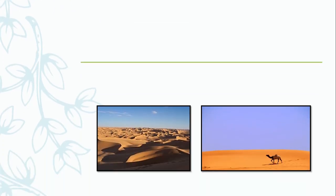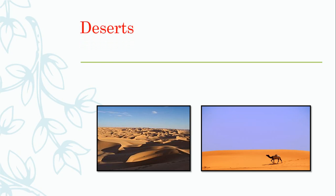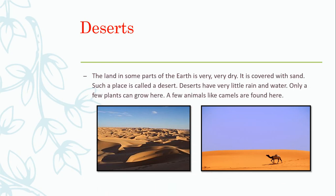Now, can you guess the next type of land by looking at these pictures? Yes, it is easy again. Now, what are deserts? The land in some parts of the earth is very, very dry. It is covered with sand. Such a place is called a desert. Deserts have very little rain and water. Only a few plants can grow here. A few animals like camel are found here.